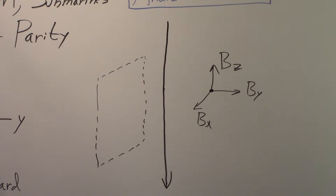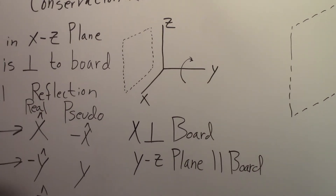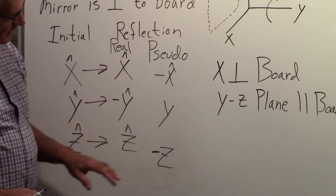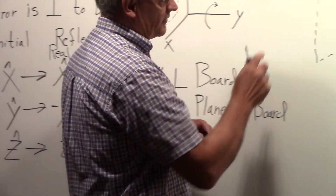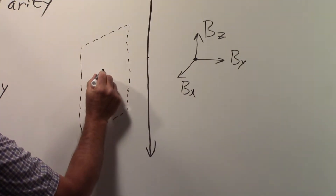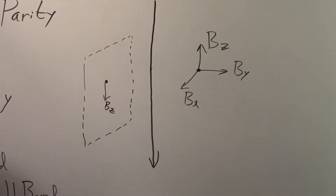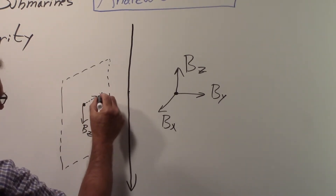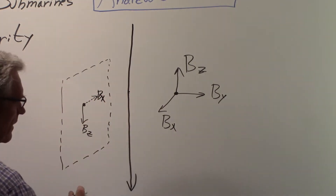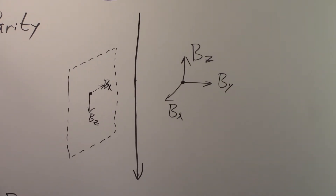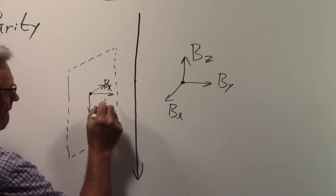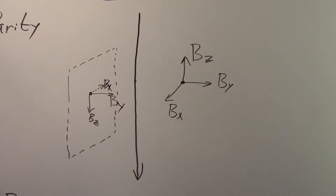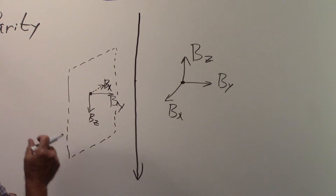If we do the reflection, recalling how things transform: this should be minus Z in the mirror. The pseudo-vector changes direction when it's parallel to the mirror, so in the mirror we see Z pointing down. The X component, which was coming out of the board, is now going into the board. The Y component, which is perpendicular to the mirror, stays the same — so it is actually coming out. All these reflections are opposite to what we saw in the case of the electric field.